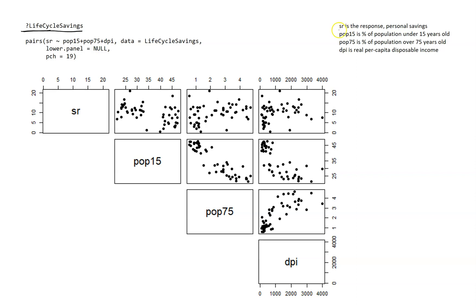Just to give you some context: SR is our response and it represents personal savings. Then we have two demographic variables. POP15 is the name of the variable containing information on the percent of the population that is under 15 years old, and POP75 is over 75 years old. And then DPI is a real per capita disposable income measurement. So if we're trying to model SR, our response, we're going to use these three variables.